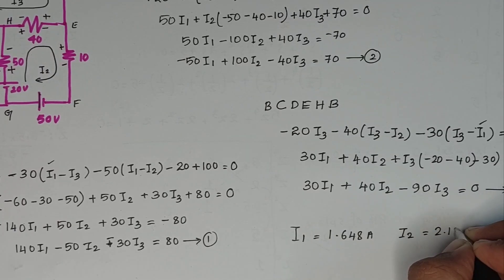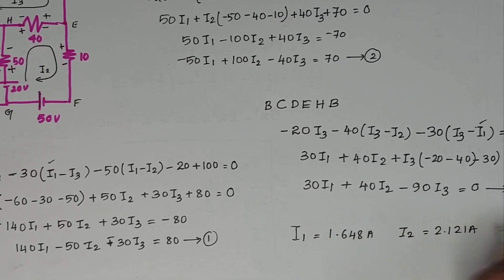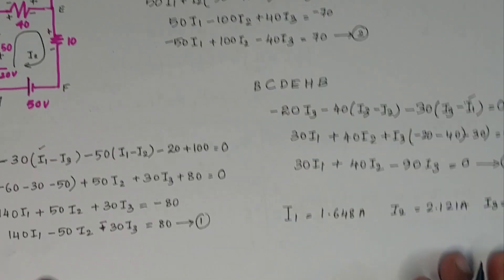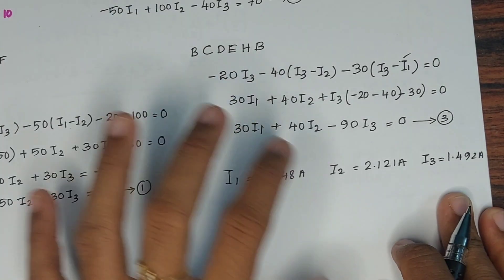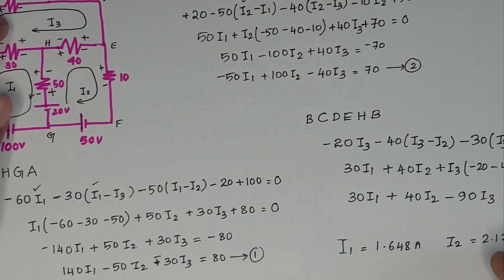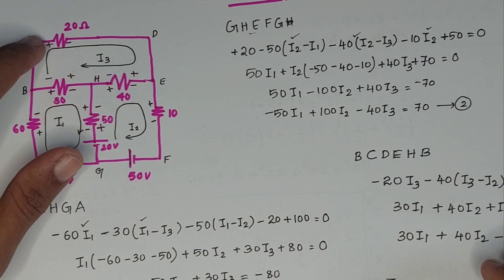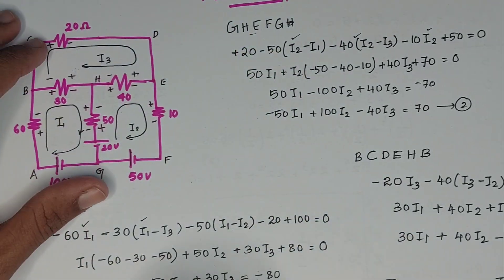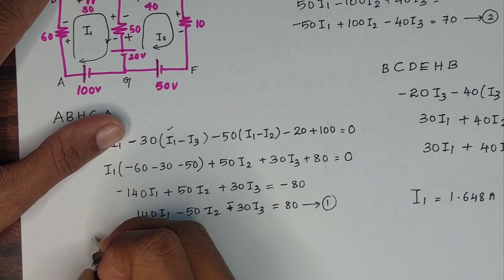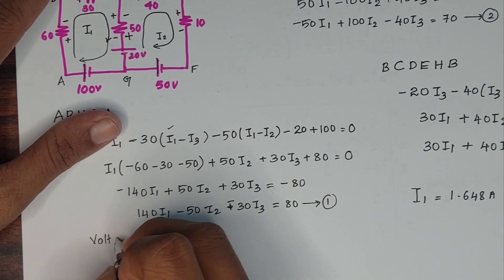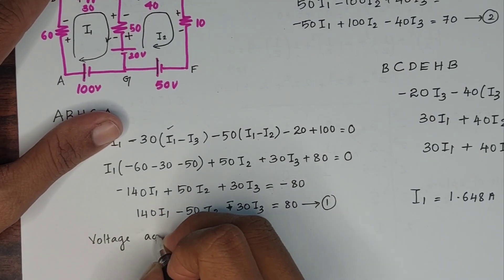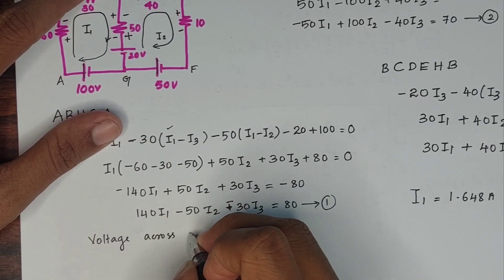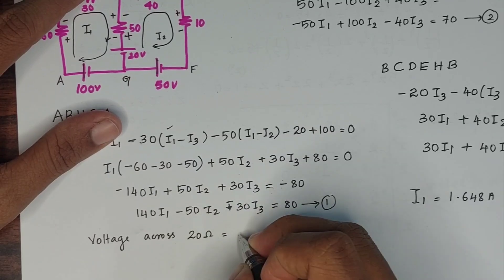Solving the three mesh equations simultaneously, we get: I2 equals 0.121 A and I3 equals 1.492 A. Now, if you want to find the voltage across the 20 ohm resistor, we use the mesh currents and apply V equals I times R.